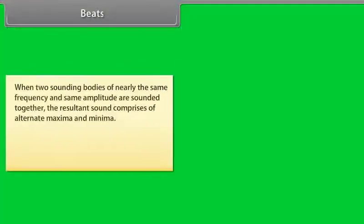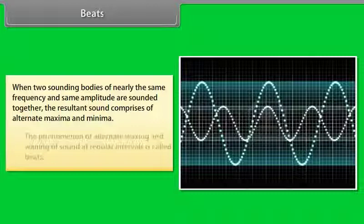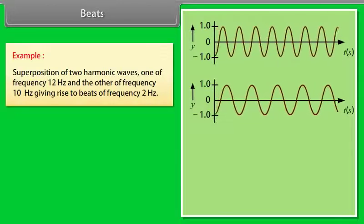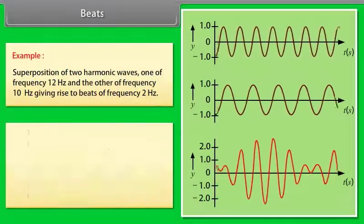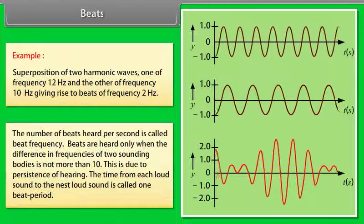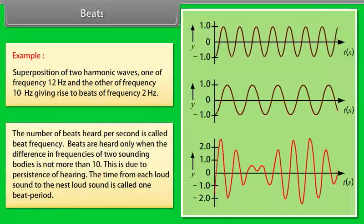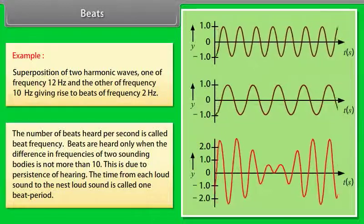When two sounding bodies of nearly the same frequency and same amplitude are sounded together, the resultant sound comprises alternate maxima and minima. The phenomenon of alternate waxing and waning of sound at regular intervals is called beats. The number of beats heard per second is called beat frequency. Beats are heard only when the difference in frequencies of two sounding bodies is small. The time from each loud sound to the next loud sound is called one beat period.